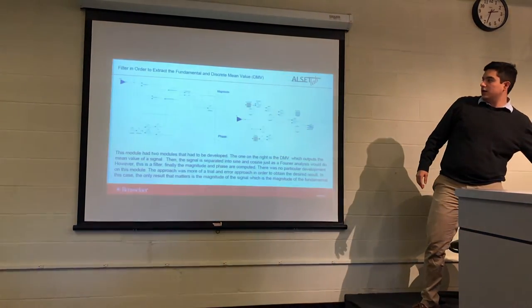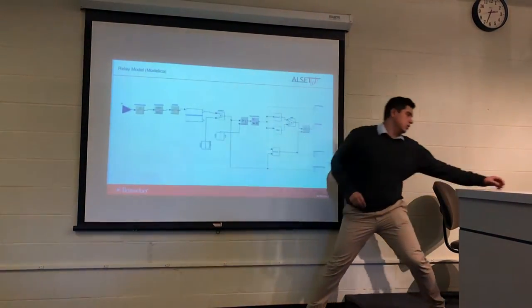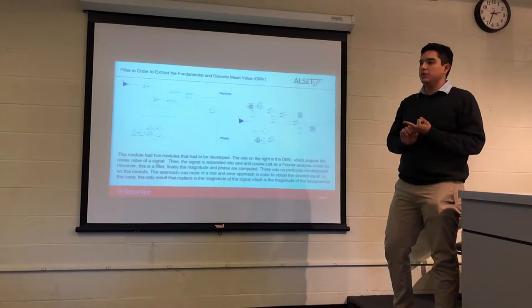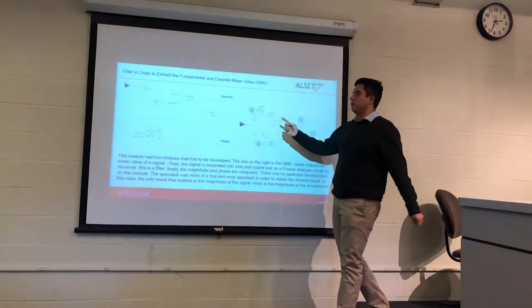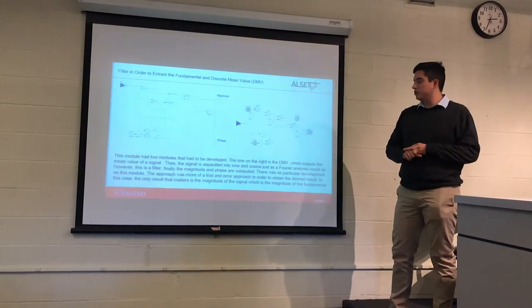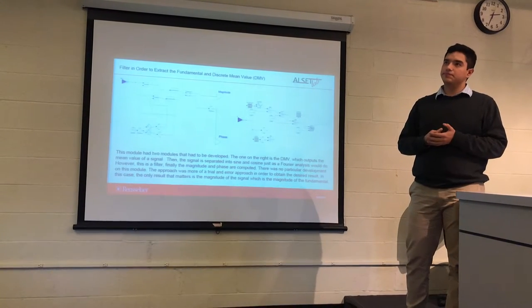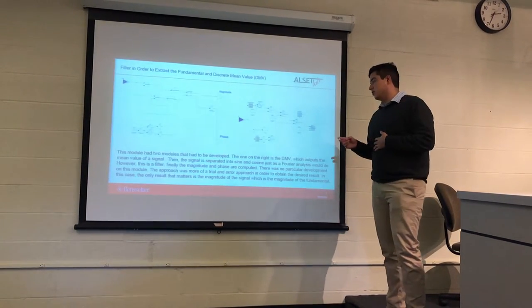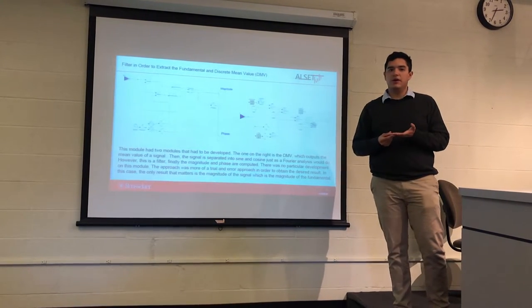So the first part is this filter, which there had to be two little modules that had to be implemented. First it was the discrete mean value, which is inside the extracting of the fundamental module, which tells you the mean value of the signal. Then much like a Fourier analysis, you input it with sines and cosines in order to finally get the magnitude and the phase. In this case we don't really care about the phase, we're just looking at the magnitude of the current.